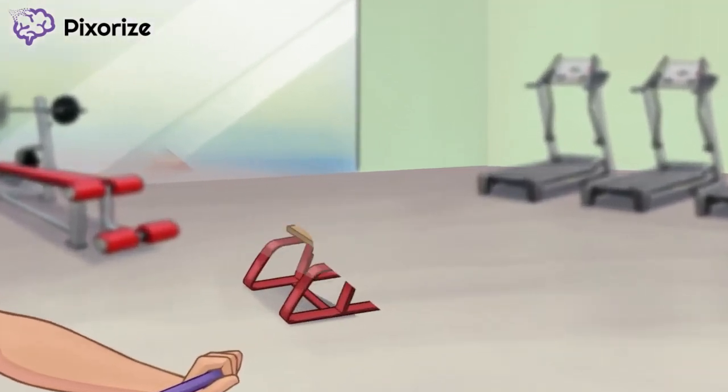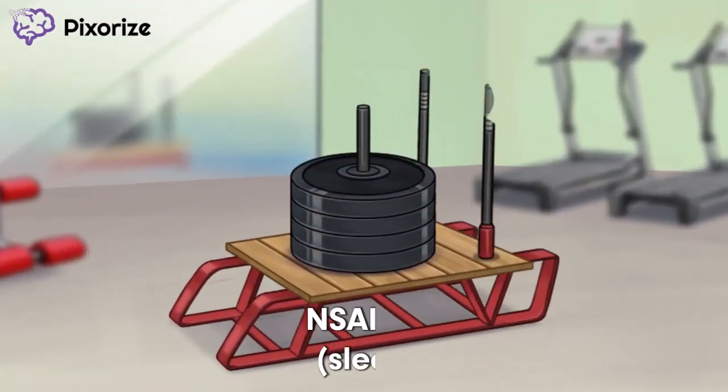Now onto the treatments. Take a look at this workout sled. A sled is a recurring symbol for NSAIDs, which are the first-line treatment for resolving an acute tension headache. NSAIDs are things like aspirin, ibuprofen, and naproxen. Just remember the NSAID sled and you'll have this treatment down.